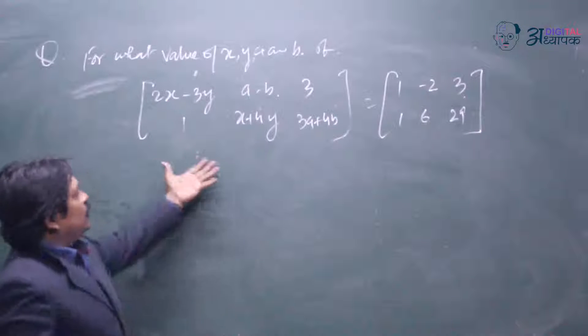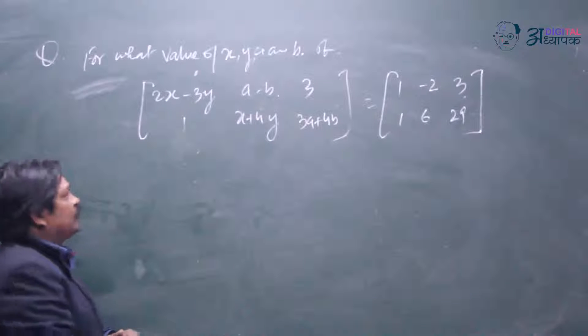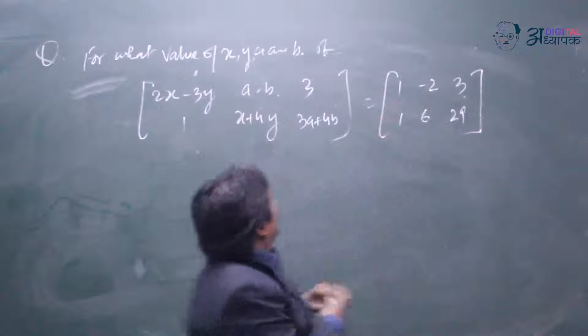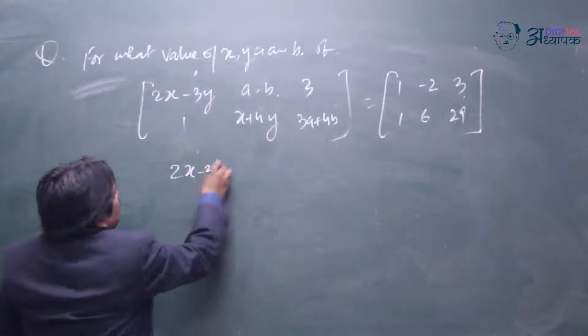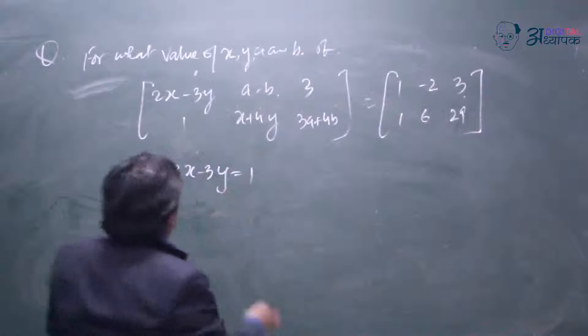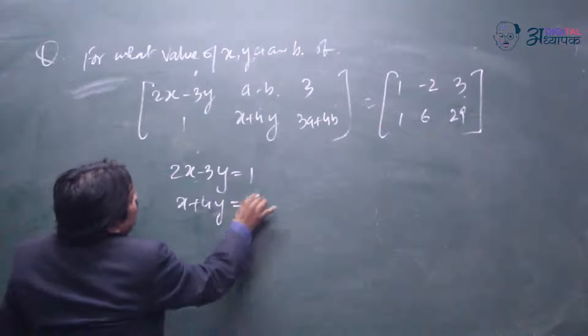These two matrices are equal matrices. In equal matrices we have to compare the elements. 2x minus 3y will be equal to 1. So 2x minus 3y equal to 1. And then we have to compare x plus 4y, so x plus 4y is equal to 6.